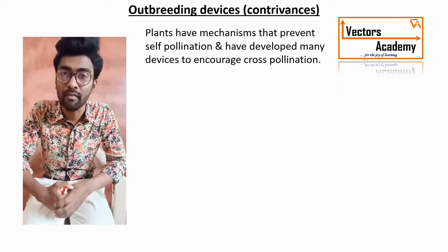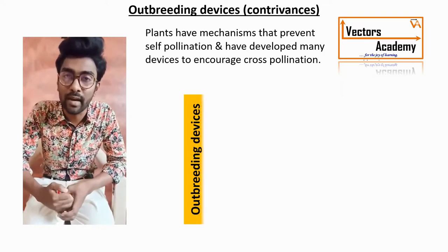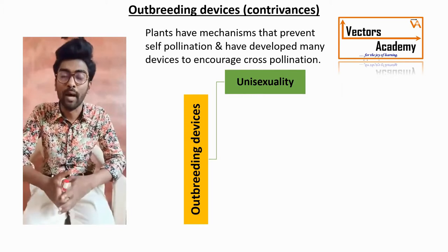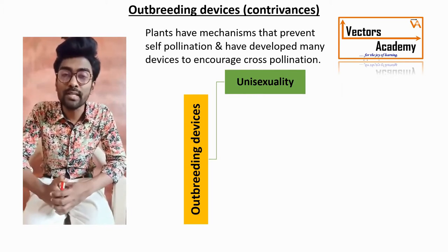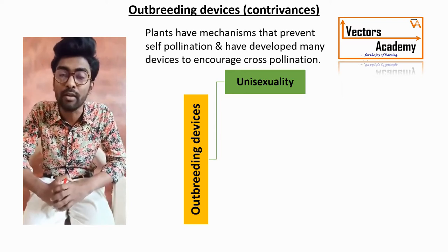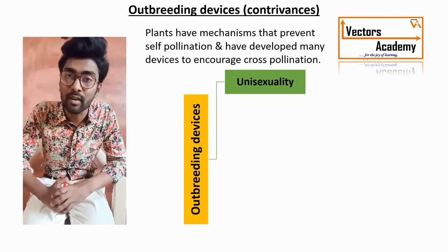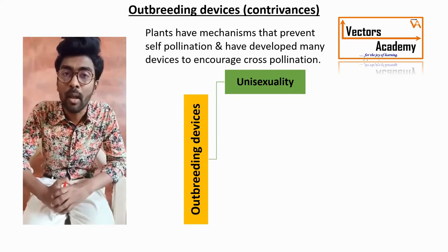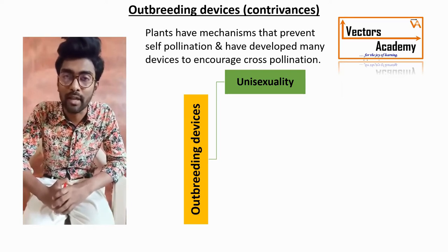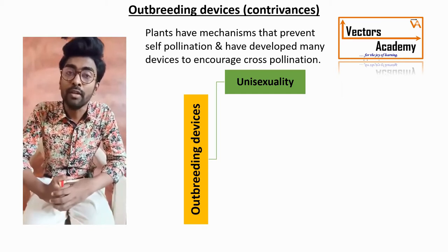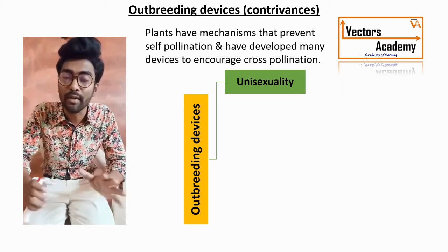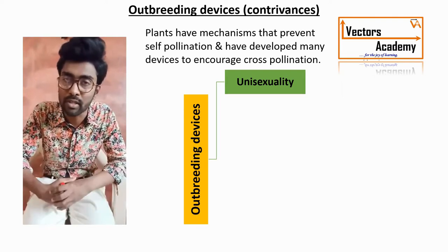The first outbreeding device is unisexuality. 'Uni' stands for one. The unisexual flowers are generally present on different plants. Unisexual flowers are flowers which contain either male or female gametes. This is also called dioecism. As the unisexual flowers are present, it will generally avoid self-pollination — self-pollination is not possible.